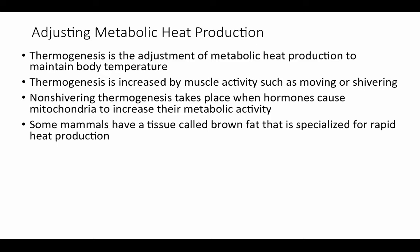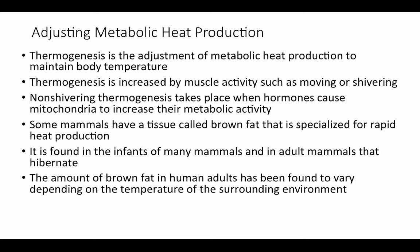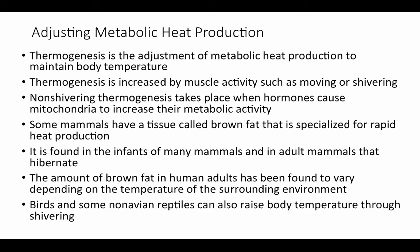Some mammals have a tissue called brown fat, named for its high mitochondrial content, which is specialized for rapid heat production via non-shivering thermogenesis. It is particularly common in mammalian infants to boost heat production, and in adult mammals that hibernate. The amount of brown fat in human adults has been found to vary with surrounding environmental temperature, representing an acclimatization response.